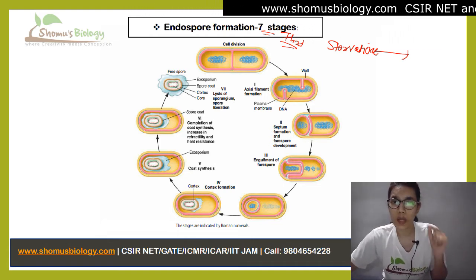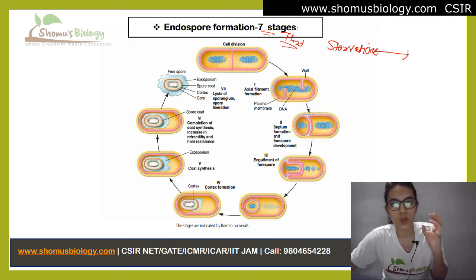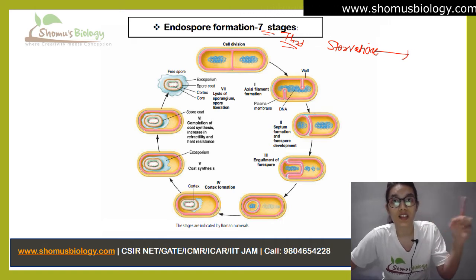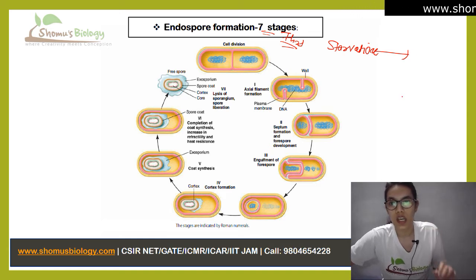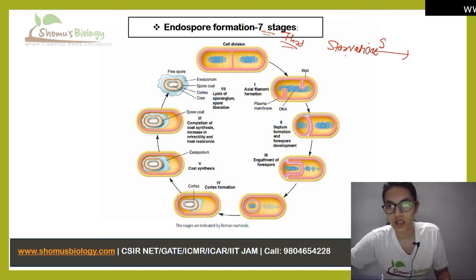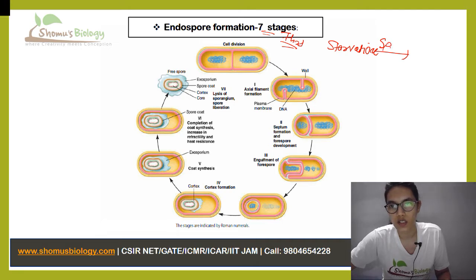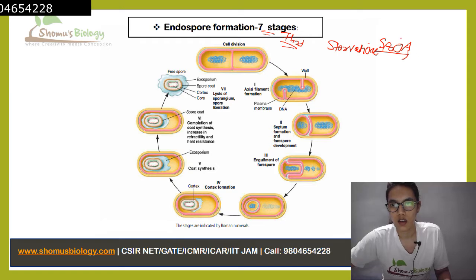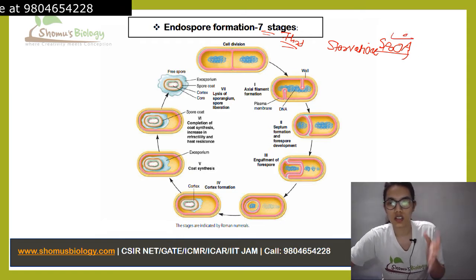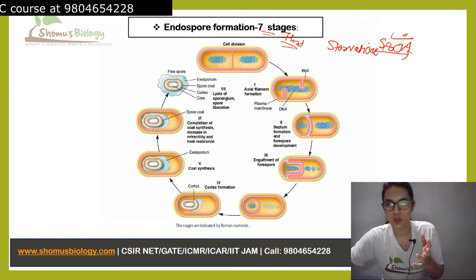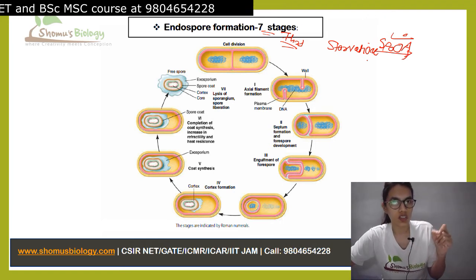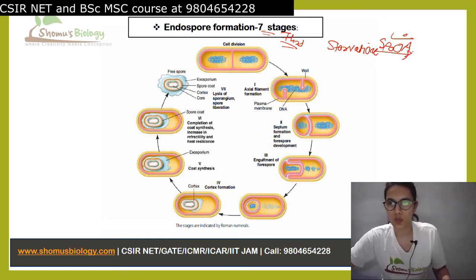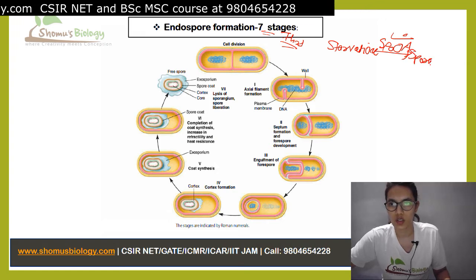The protein which is going to help in sensing the starvation condition is called SporOA. This particular transcription protein is going to help, and when there is starvation, it leads to sporulation. This factor senses the starvation and signals to the bacteria to save the most precious things it has, so that when environmental conditions get normal again, it can perform binary fission and reproduce.